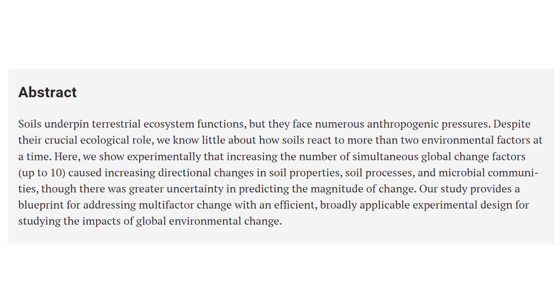Here we show experimentally that increasing the number of simultaneous global change factors up to 10 caused increasing directional changes in soil properties, soil processes, and in microbial communities, though there was greater uncertainty in predicting the magnitude of change. And this is basically a combined methods and results sentence. It's just one sentence that does it both.